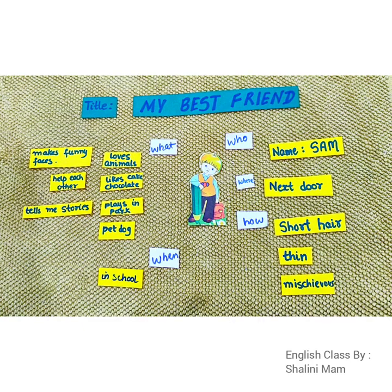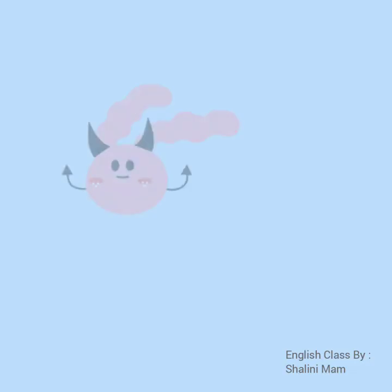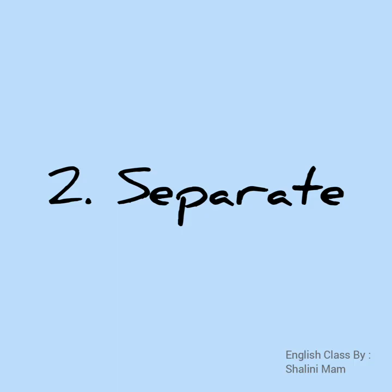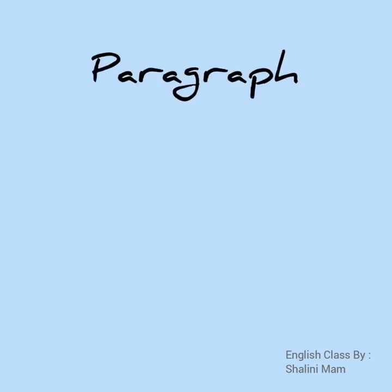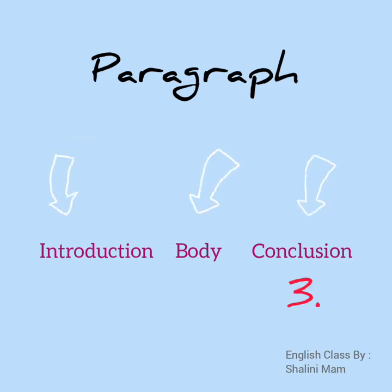The last part is when you ask questions using 'when,' like when you guys met — you met in school. And that's how you make an outline for your paragraph. The first step of outlining is done. This brings us to the second step, which is separating. Before you separate these outlined points, you must know that a paragraph consists of three different parts: the first one is the introduction, the second is body, and the third is conclusion. You have to divide your paragraph into these three categories.